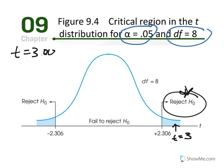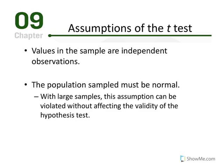Next, we discuss the assumptions of the t-test, similar to those in Chapter 8. First, the values in the sample must be independent observations. Second, the population sampled must be normal. Larger samples produce more normal distributions, and as long as n is greater than 30, the distribution of t-values will also be normal. The larger the sample, the better. If the original population is skewed, sample size must be at least greater than 30.